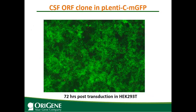Next is some validation data. A CSF (colony-stimulating factor) clone was placed in the GFP fusion vector, and viral particles were packaged using OriGene's packaging kit. You can see very high transduction efficiency and strong, intense GFP expression showing high gene expression. CSF is a transmembrane and secreted protein, and you can see it is localized in the correct cellular localization, suggesting the GFP-fused CSF is going to the right cellular compartment.